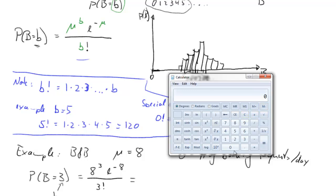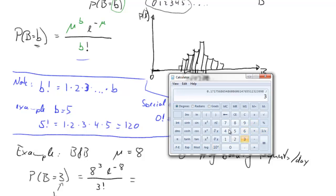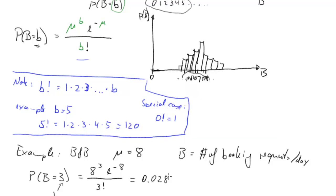So e to the negative 8 gives that value. Now we need to multiply this with 8 to the third. That gives 0.17, and now we divide by 3 factorial. What we get is 0.0286. So that's our probability that B will take the value of 3.